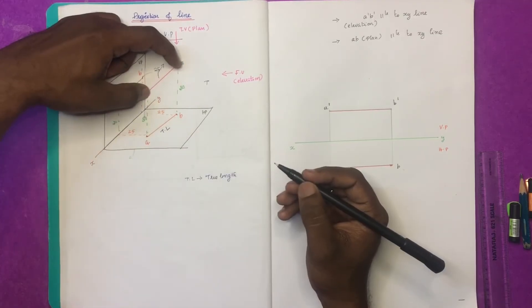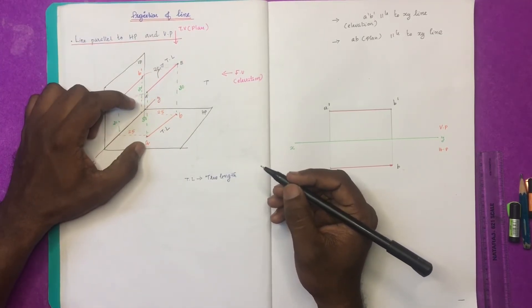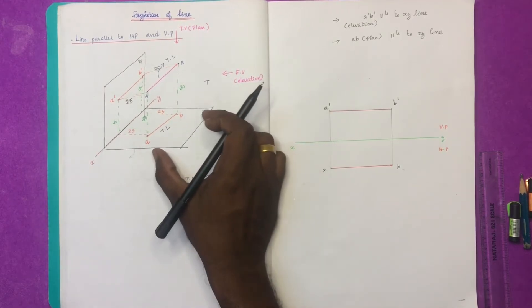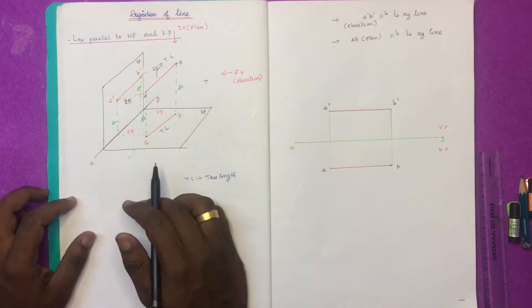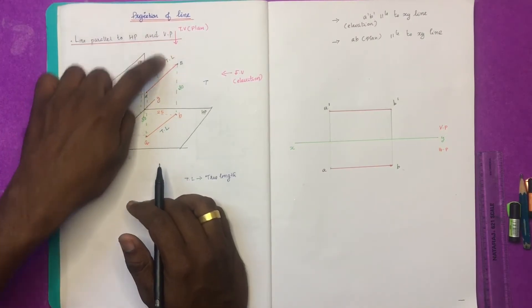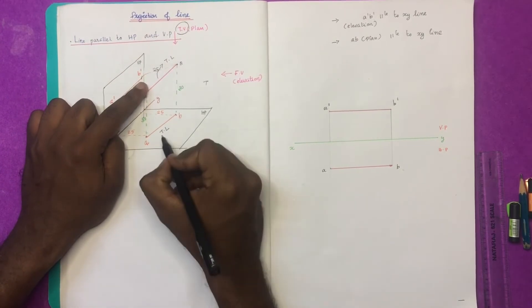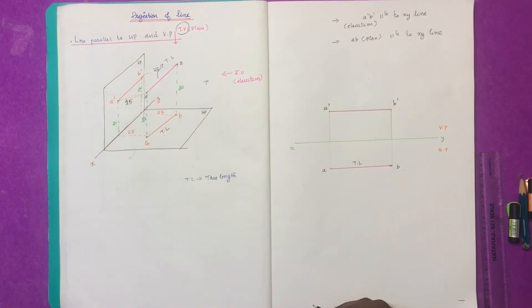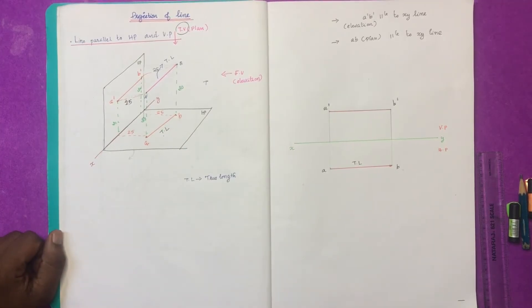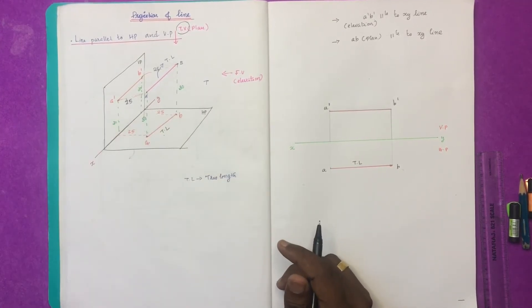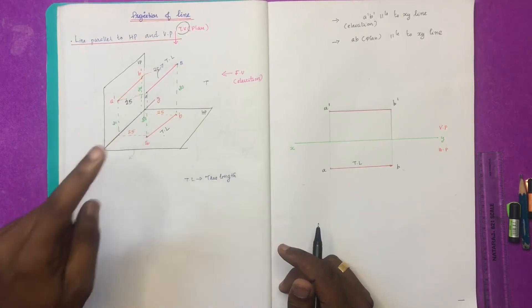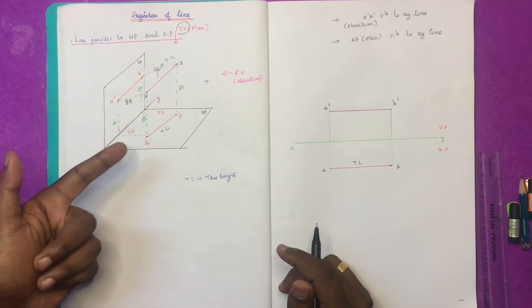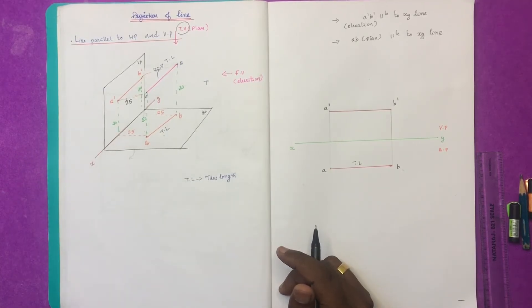This line should be parallel to that particular plane. If the line is parallel to the HP, the projection of the line on HP will give the true length of the line.